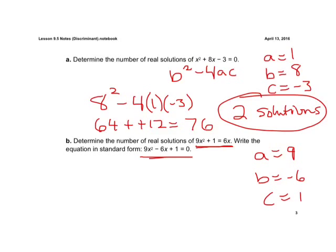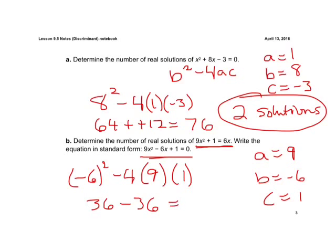If we plug them into our discriminant formula, we have b squared, which is negative 6 squared, minus 4 times our a value, which is 9, times our c value, which is 1. If we go ahead and solve, negative 6 squared is a positive 36, minus 4 times 9 is 36, times 1 is 36, so we have 0. So we know if our discriminant is equal to 0, we have one solution. Okay, and that crosses at one point on the x-axis.